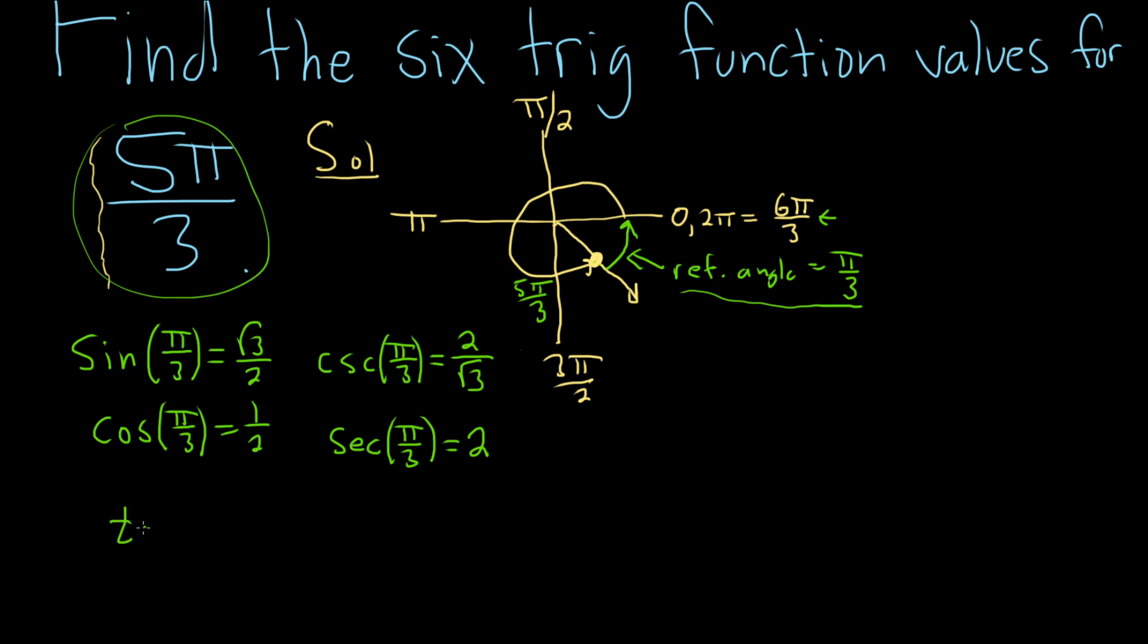Then we have the tangent of π/3. That's going to be sine over cosine, so that will be the square root of 3 over 2 divided by 1/2. So that's really the square root of 3 over 2 times the reciprocal, so 2 over 1. The 2's cancel, and we simply get the square root of 3.